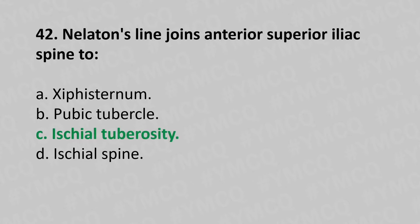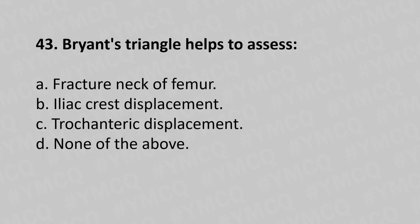Moving to our 43rd question: Bryant's triangle helps to assess option A fractured neck of femur, option B iliacus displacement, option C trochanteric displacement, option D none of the above. The answer is option C trochanteric displacement.